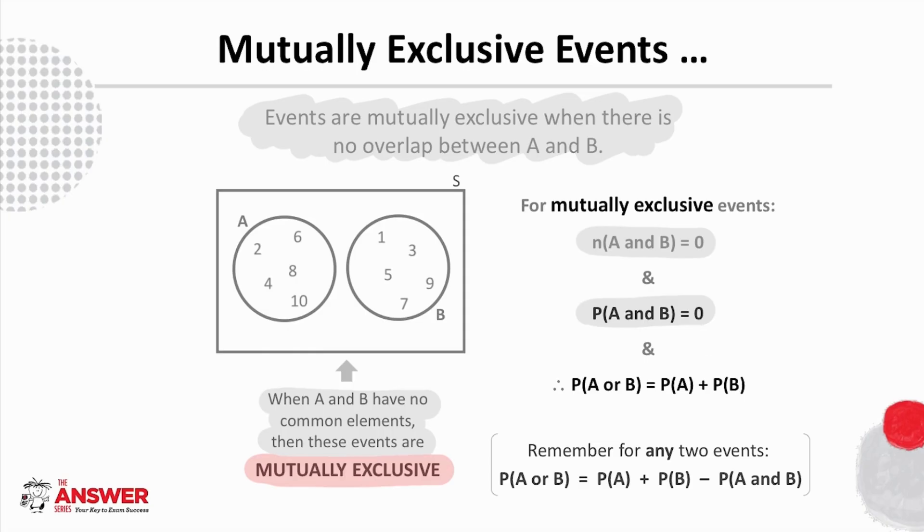And so if we then consider the rule that is true for any two events, we can see that this last bit is 0 for mutually exclusive events. And so it is true to say for mutually exclusive events that P of A or B equals P of A plus P of B.